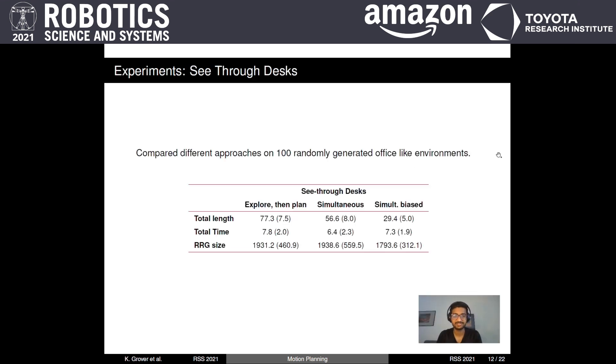We compared three different approaches in our experiments. The first one is where the robot explores the whole environment first and starts planning once it has the knowledge of the whole environment. The second one is where it explores and tries to satisfy the specification simultaneously but without using the bias that we introduced. And the third one is simultaneous with biasing.